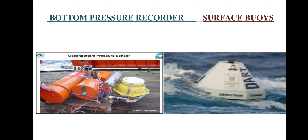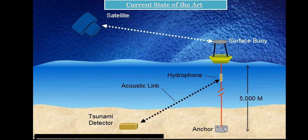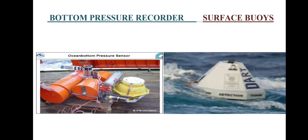The bottom pressure recorder and surface buoy: a digital broadband depth sensor is the main sensing element for the bottom pressure recorder. This sensor continuously monitors pressure and if pressure exceeds its value, it automatically reports to the warning center. The bottom tsunami detector sends data and warnings to the coastline offices. The surface buoy makes satellite communication to warning centers that evaluate the threat and issue a tsunami warning.